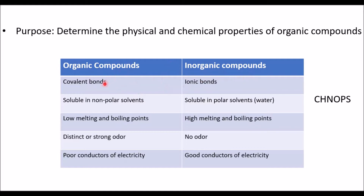Organic compounds are formed by covalent bonds, while inorganic compounds are formed by ionic bonds. Organic compounds are soluble in non-polar solvents, whereas inorganic compounds are soluble in polar solvents like water. Organic compounds have low melting and boiling points, while inorganic compounds have high melting and boiling points.